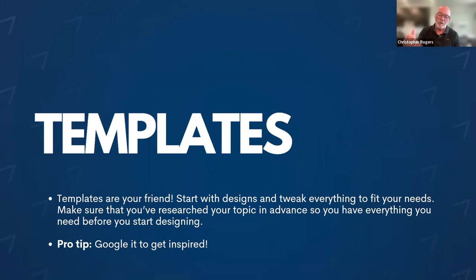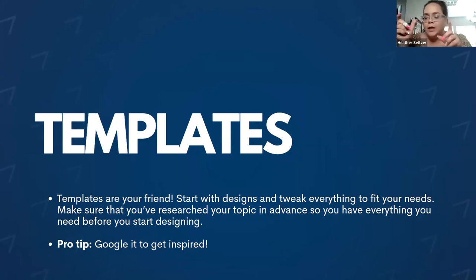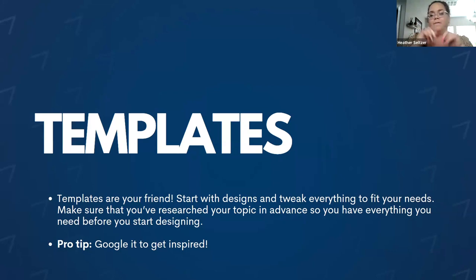Chris asked: when you customize a template, can you then save it as another template going forward? You can absolutely do that — it's super easy. It automatically saves as a new project whenever you start editing something. In the upper right-hand corner it'll say 'untitled' or pull the name from the template, and you can change it to whatever you want. You can group projects together and label them — like Facebook posts, Facebook banner, Facebook ad.